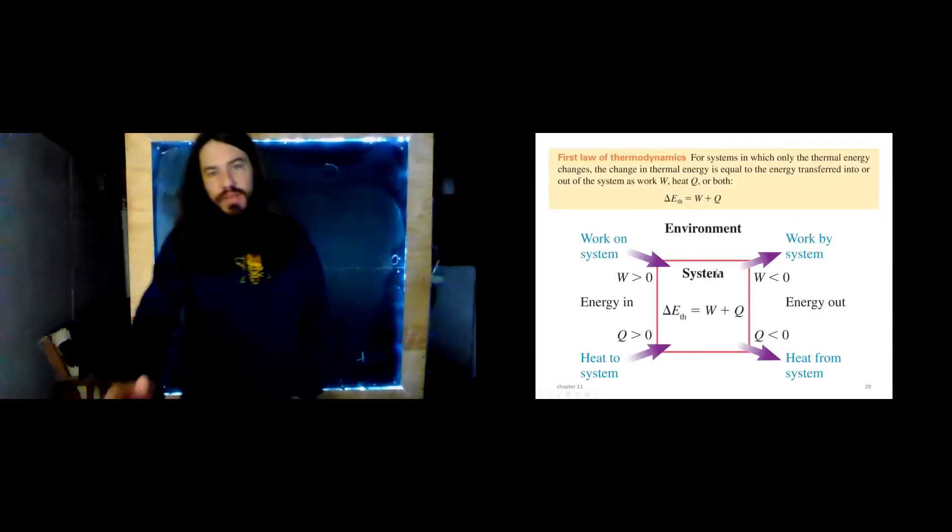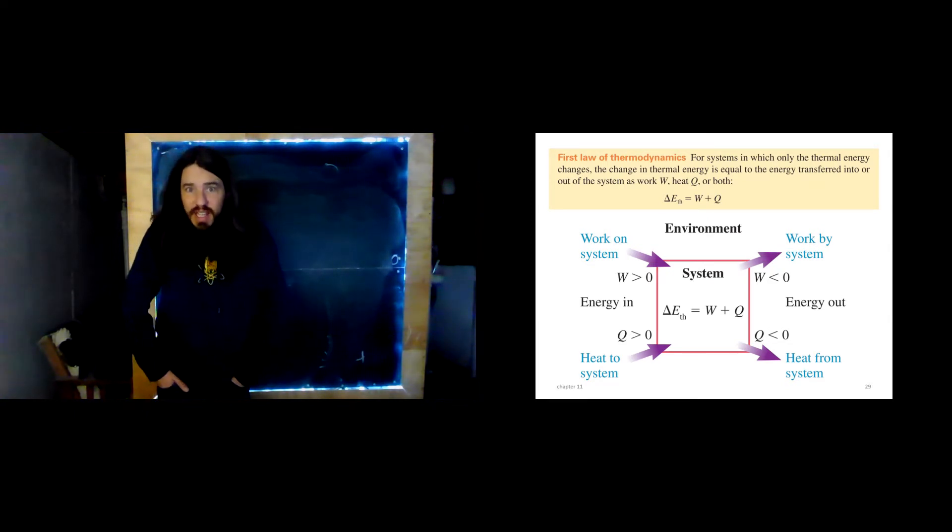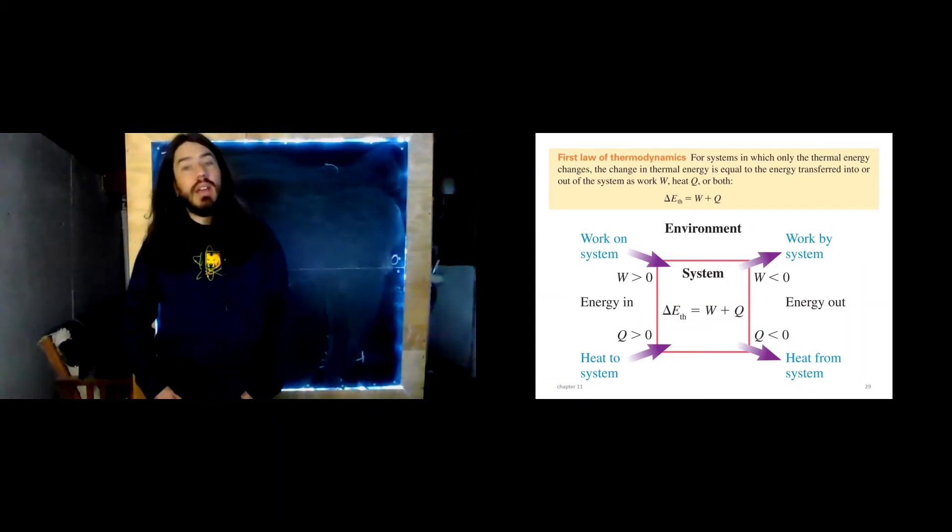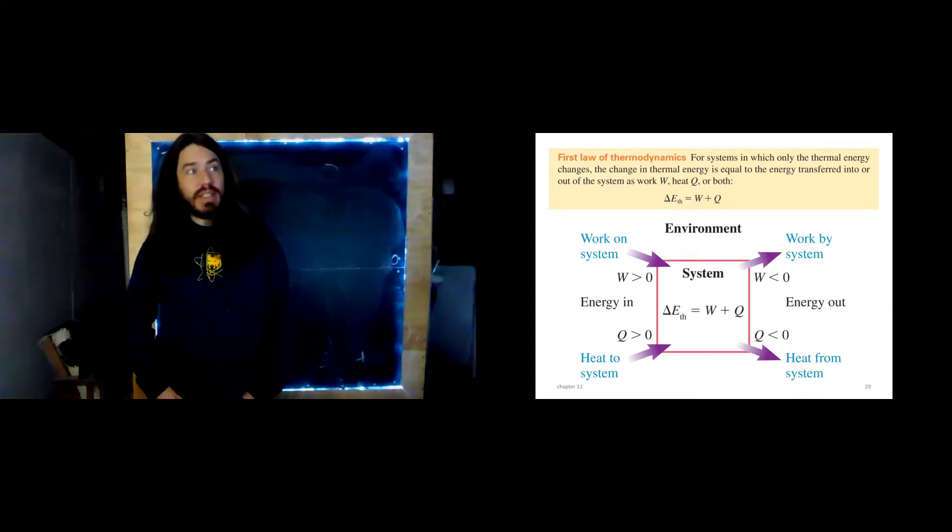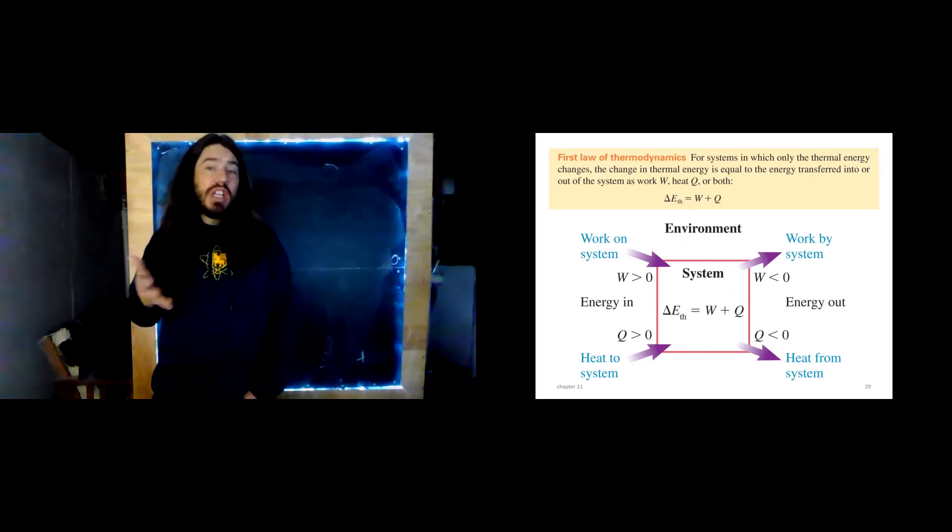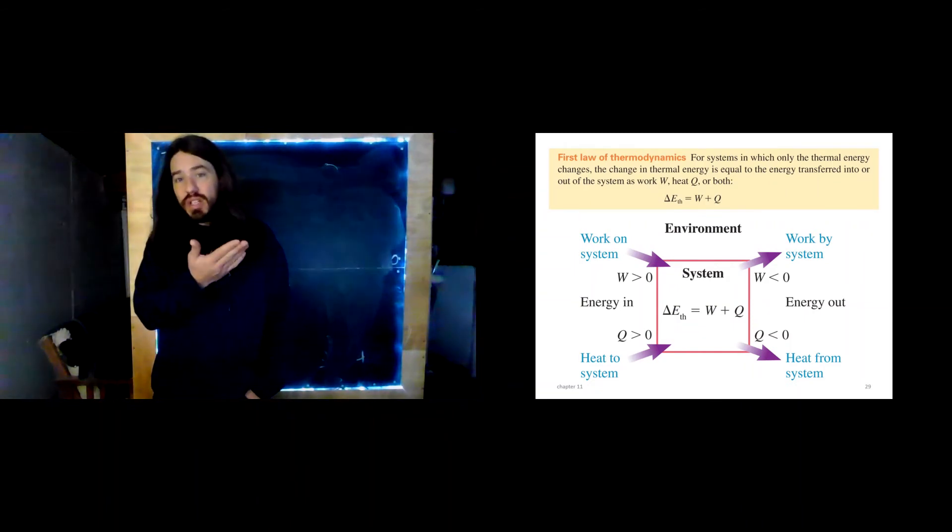This brings us to the first law of thermodynamics. The first law of thermodynamics is one of those kind of tricky things that we learn about in this class where the math itself is very straightforward. It's just two things added together to make a third thing. That's pretty straightforward. But using it can be tricky, applying this equation properly. That's where the tricky part comes in. Here's the first law of thermodynamics. It says, for systems in which only the thermal energy changes, the change in thermal energy is equal to the energy transferred into the system, into or out of the system as work, heat, or both.